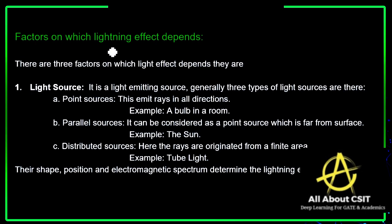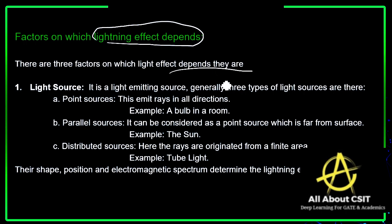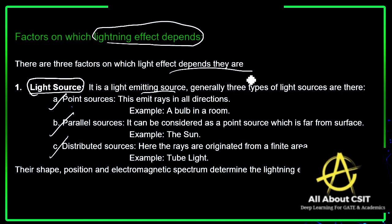Now let's see the factors on which lighting effect depends. There are three factors: the first one is the light source. A light source is a light-emitting source, and generally three types of light sources are present: point source, parallel source, and distributed source.